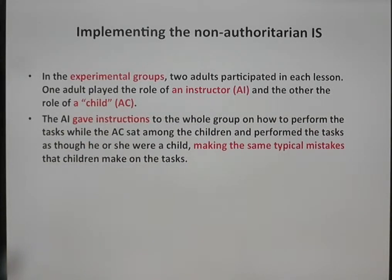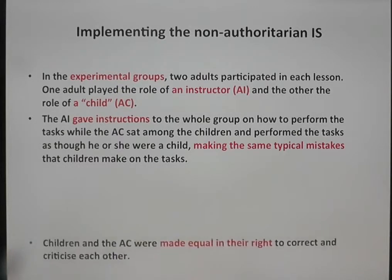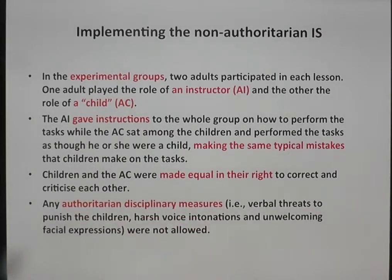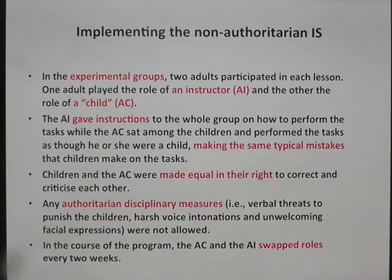The adult instructor gave instructions to the whole group on how to perform the tasks, while the adult child sat among the children and performed the tasks as though he or she were a child, making the same typical mistakes that children make. Children and the adult child were made equal in their right to correct and criticize each other. Any authoritarian disciplinary measures — such as verbal threats, harsh voice intonations, and unwelcoming facial expressions — were not allowed. In the course of the program, the adult child and the adult instructor swapped roles every two weeks.